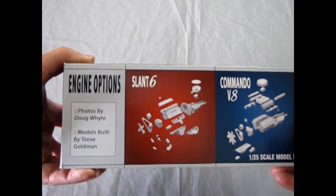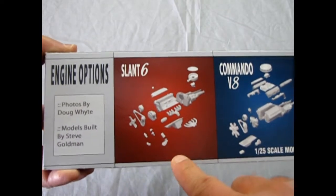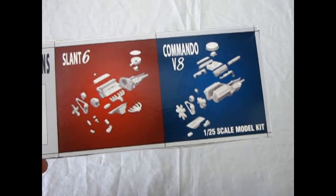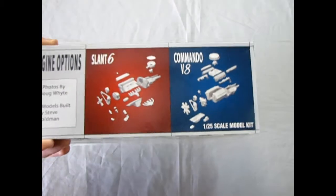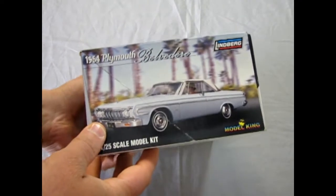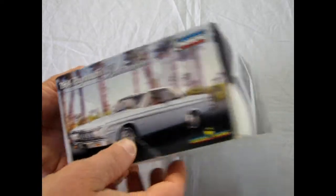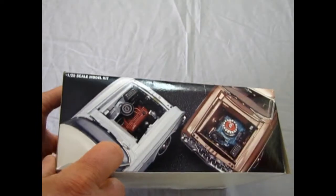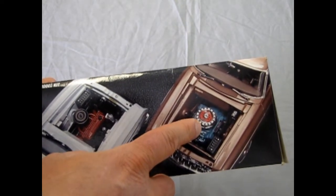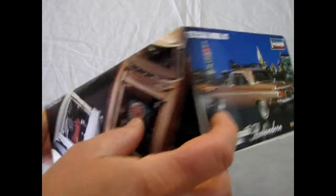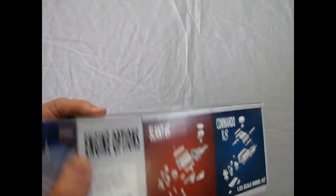As we turn this over here, you've got photos by Doug White, models built by Steve Goldman. So they show the Slant 6 and the Commando V8. Really cool. I like the little air cleaner here with all the indentations and stuff. Very basic, but very cool. On one side of the box, they show the blue and white-topped model, and that one has the Slant 6 in it. And then the copper-gold-colored one has the Commando V8.